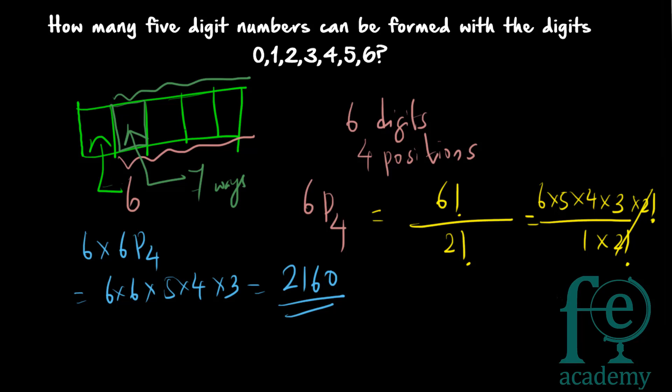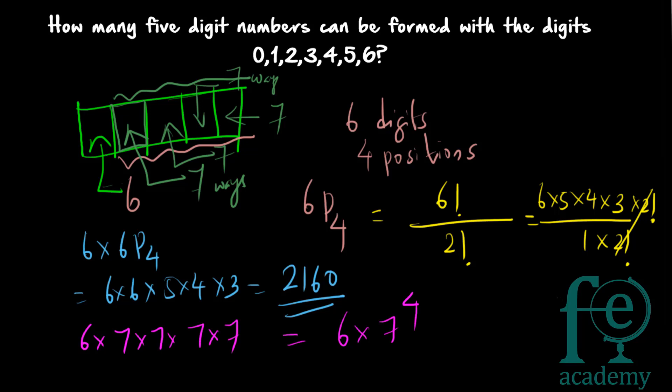So the 1,000th place can be arranged in 7 ways, the 100th place in 7 ways, the 10th place in 7 ways, and the units place in 7 ways. So the total answer will be 6 × 7 × 7 × 7 × 7 = 6 × 7⁴. That is the difference between when digits are allowed to repeat and when they are not.